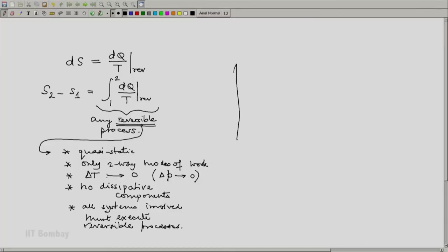For example, if we have a simple compressible system or a fluid system, a typical pair of variables would be p-v for us to plot the state space. And let us say that this is state 1 and this is state 2.